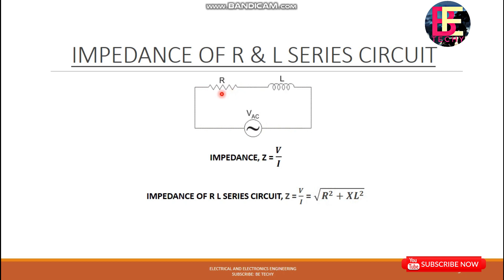The impedance is the root of R squared plus XL squared. This is the resistance squared, and XL is the inductive reactance. So Z equals √(R² + XL²). That gives us the impedance of the RL series circuit.